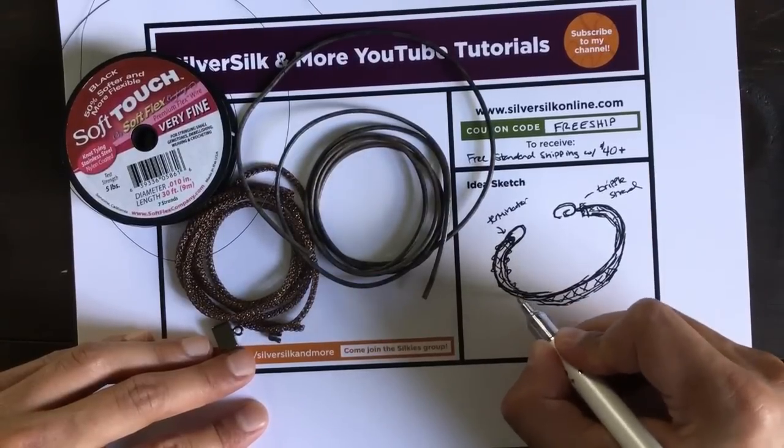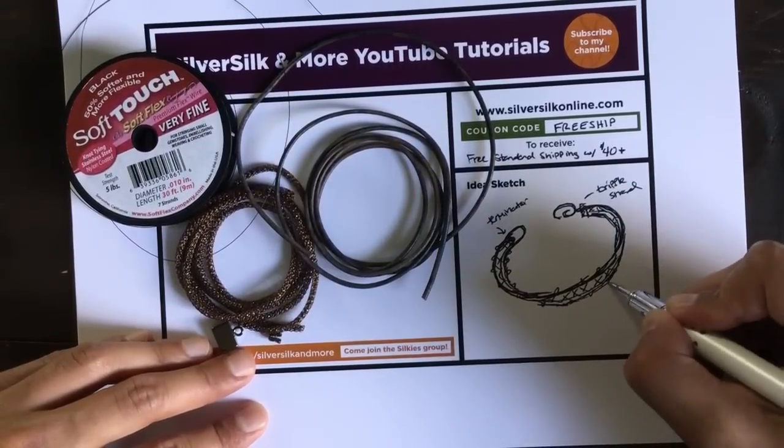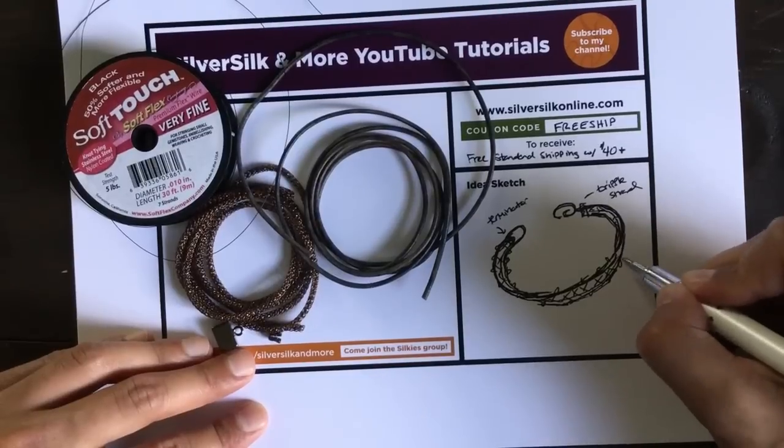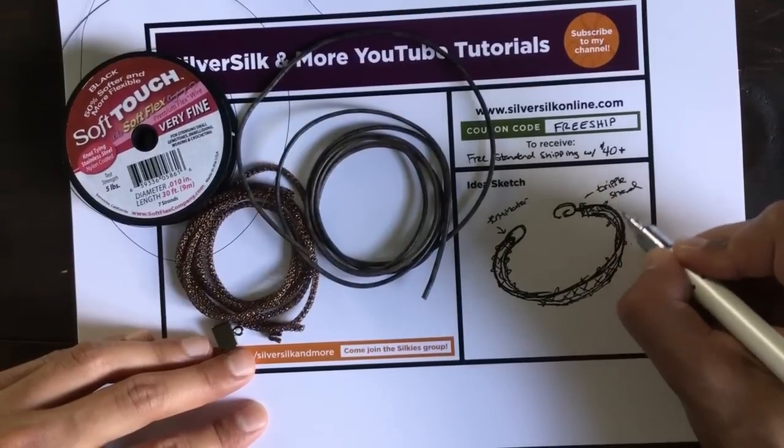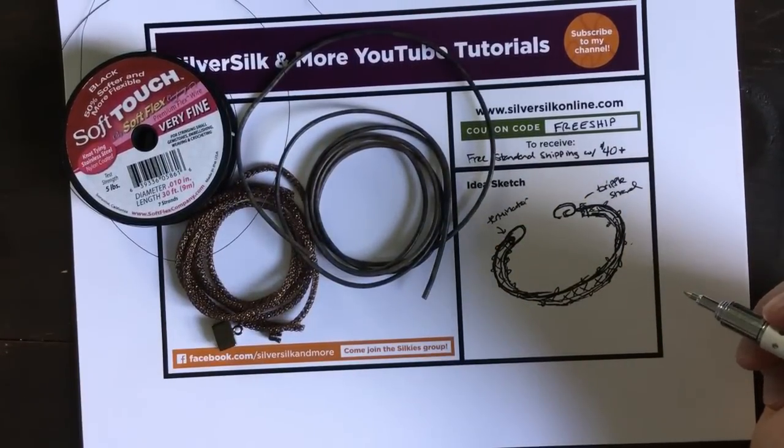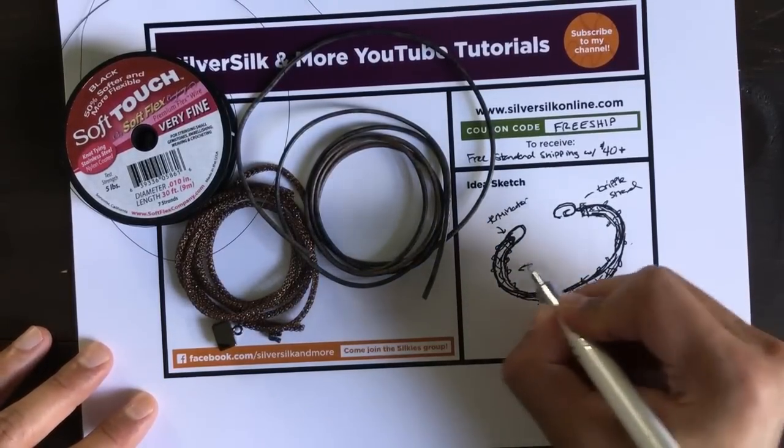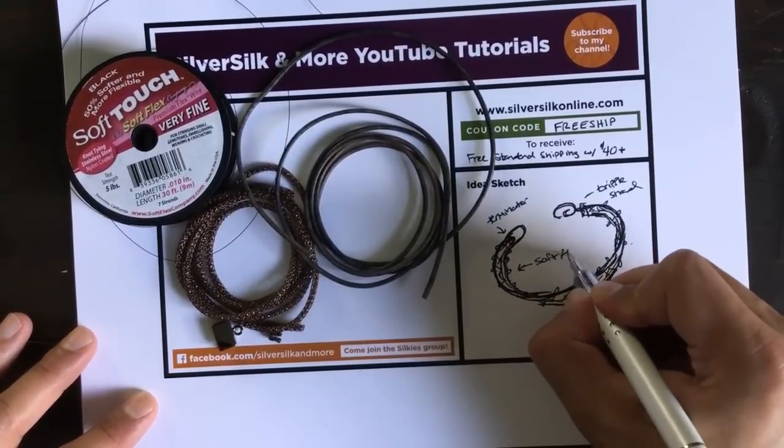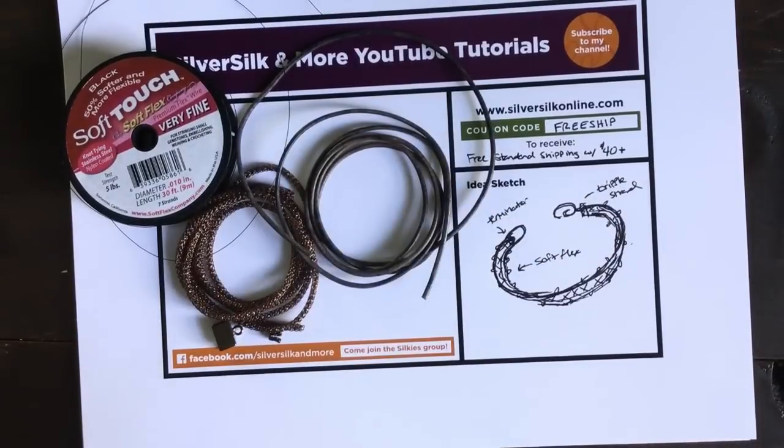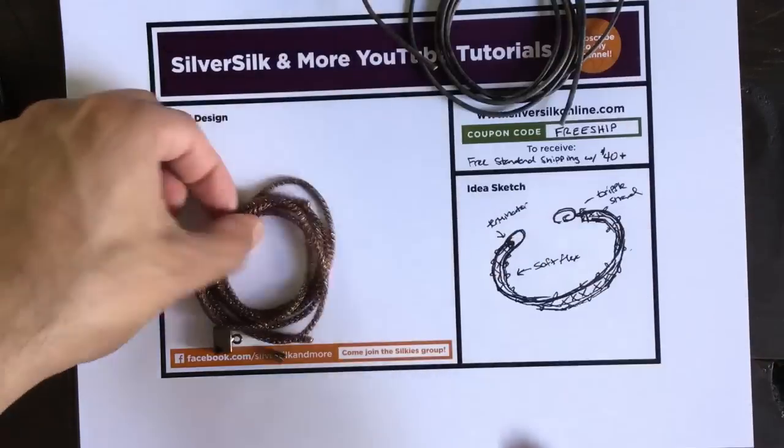We're going to use our soft flex soft touch to sew around and around to get our components all stitched together. This will be really cool. My sketch doesn't really reflect the final piece per se, other than just a graphic representation of what I think I'm going for. It kind of helped me think through what my techniques are going to be.